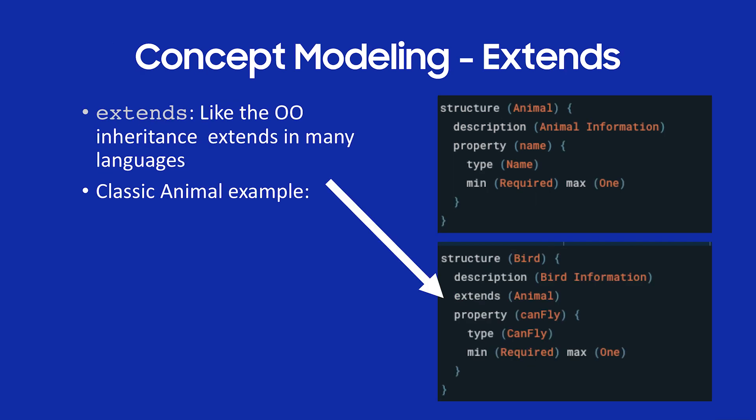Let's talk about extends. This is really from the OO extends model. So you have a base structure — an animal structure with a property of name. And then I'm extending it: bird extends animal, and I add the property 'can fly.' So just like OO extends, you extend it and then you can add behavior to that.